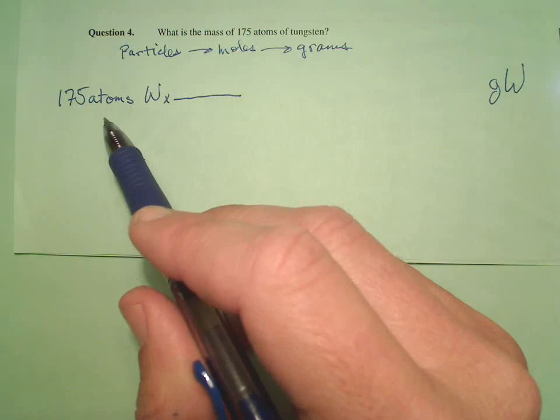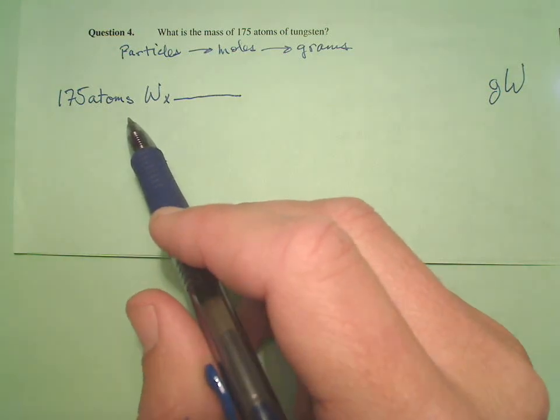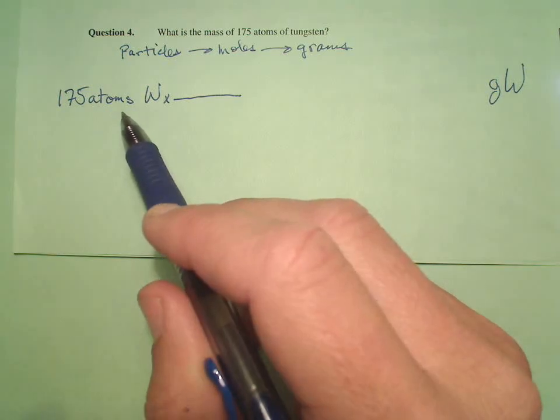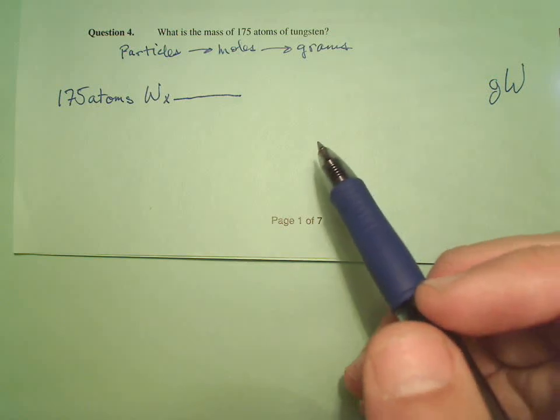175 atoms is not very much. In fact, you probably have 175 atoms of tungsten on your hands at any given time. Who knows? But it's going to be very, very tiny. So we're going to expect a very small number, probably something we can't readily measure.